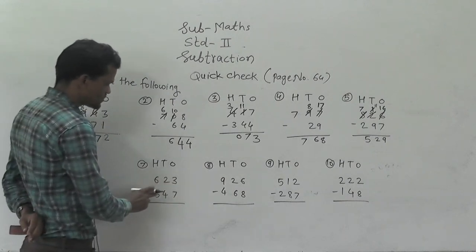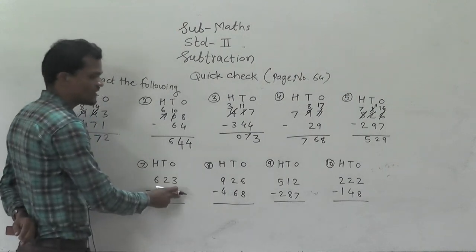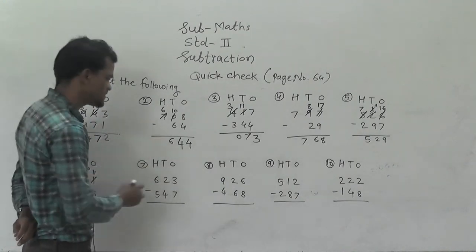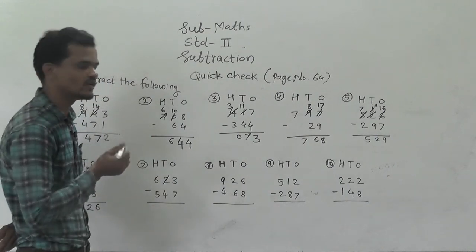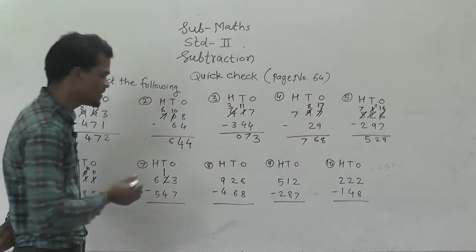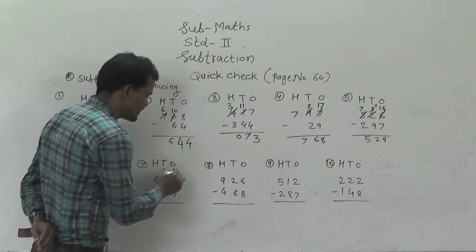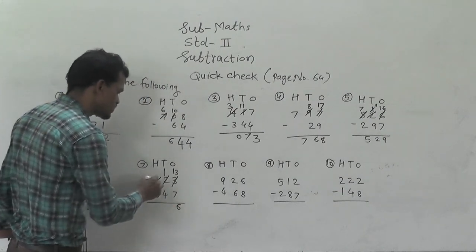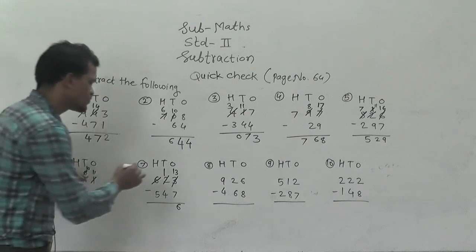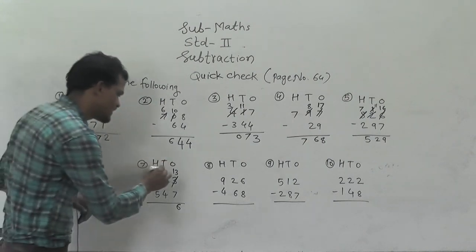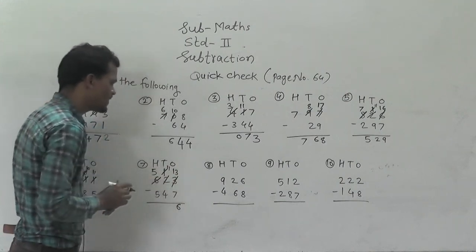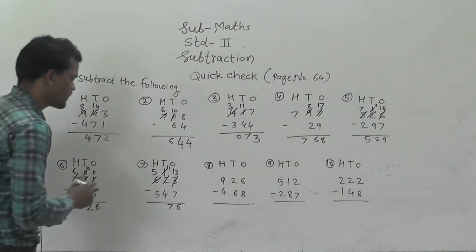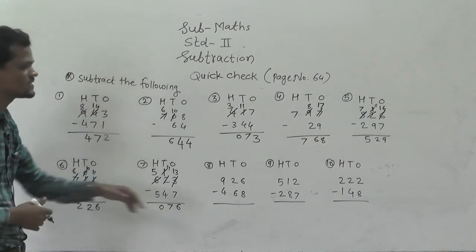Next example: 623 minus 547. 3 minus 7 — is it possible? No, because 3 is small and 7 is big. So regroup the tens digit. Here at the tens place 2 is there, so regroup that 2 into 1 ten and 10 ones, and that 10 ones add into this 3 ones, so you will get 13 ones. Now 13 minus 7 is 6. Then 1 minus 4 — not possible. So regroup this 600 into 500 and 10 tens, and that 10 tens add into this 1 ten, so you will get 11 tens. 11 minus 4 is 7, and 5 minus 5 is 0. So 76 is the answer.